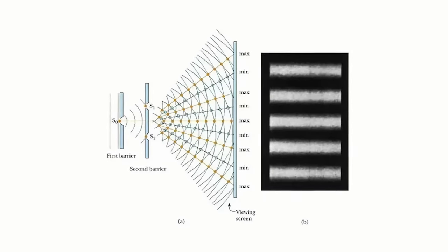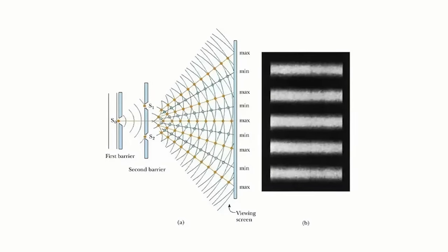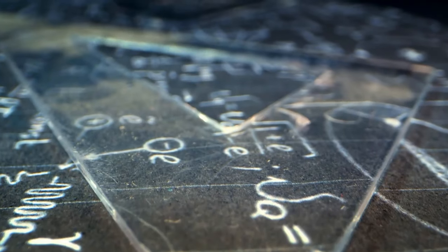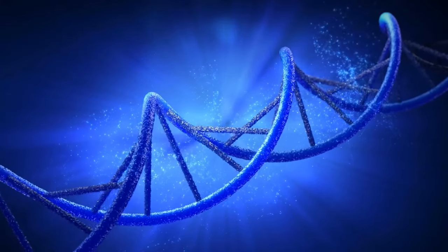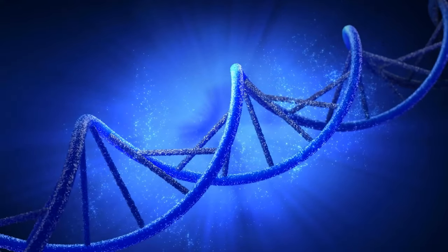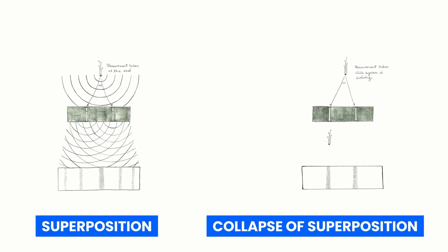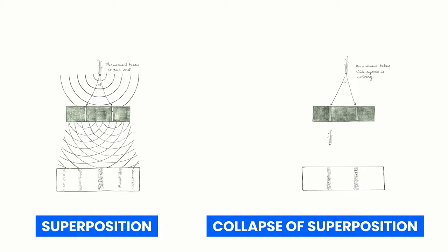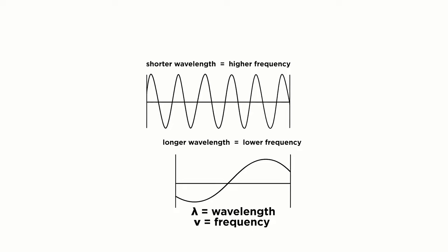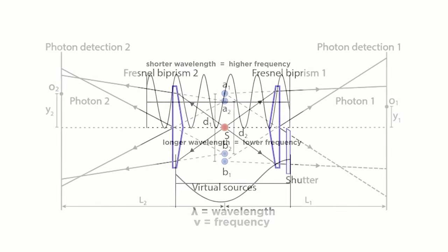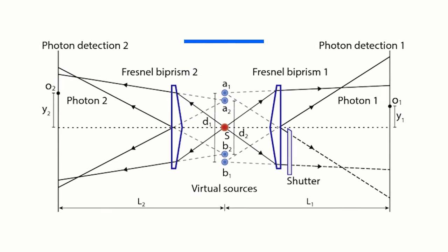Most of all, this experiment stressed the element of observation and its importance in physics and science. The experiment demonstrated that the act of observation and measurement could have a profound impact on the behavior of particles and waves. The wave-function collapse that occurs when a particle is observed is a fundamental concept in quantum mechanics, and it implies that the act of measurement can alter the state of a system.